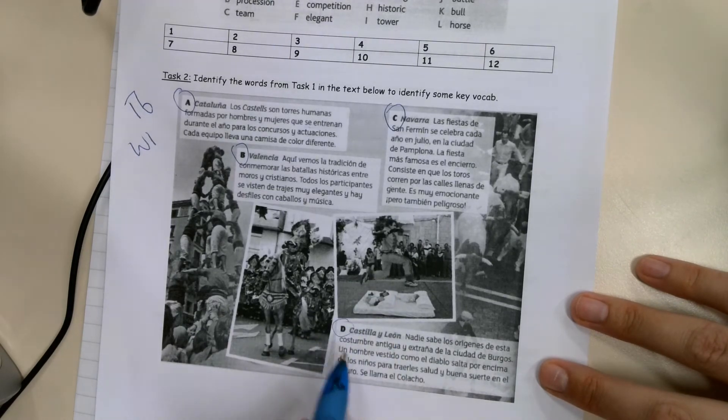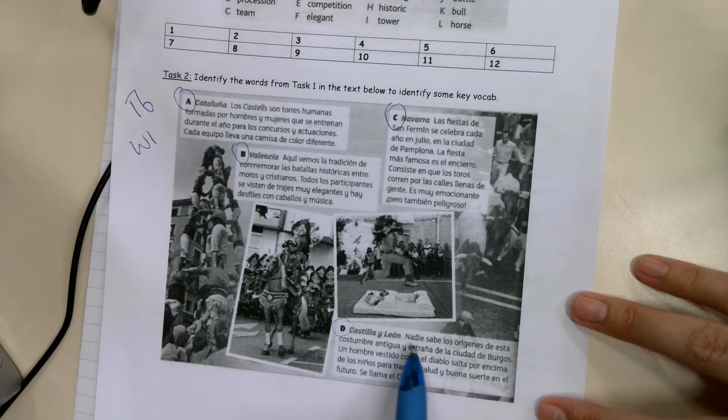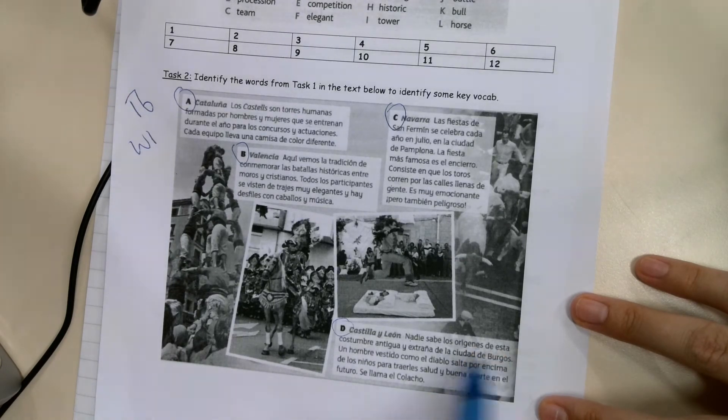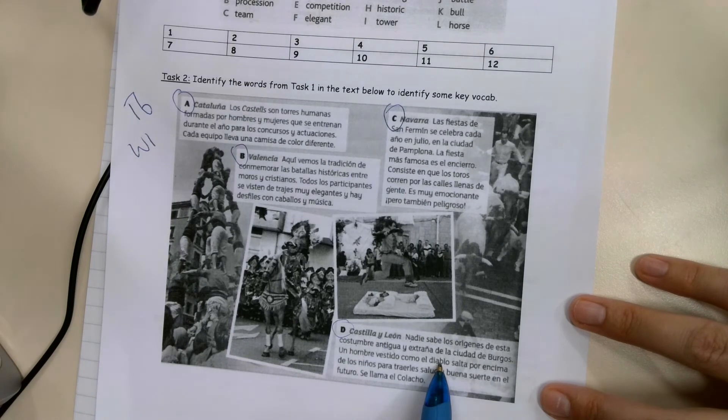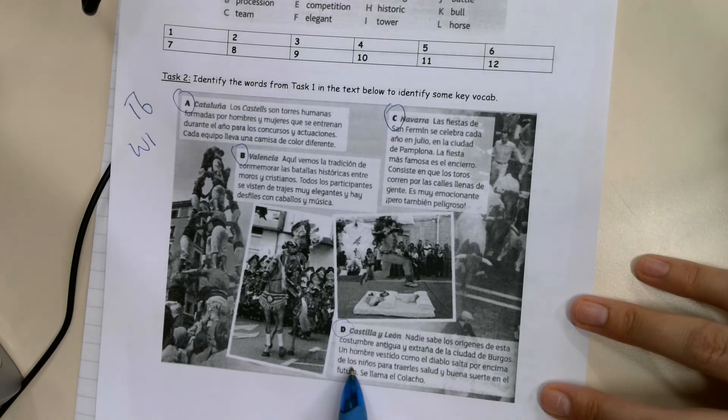And our last one is Castilla-Leon, which is a little bit more central Spain, not around the coast anywhere. Nadie sabe, no one knows the origins of this ancient, old-fashioned and strange tradition or custom from the city of Burgos. Now this one is a little bit weird. A man dressed as the devil jumps over children. So you can see here's the man there, children on the mattress down there, to bring them health and good luck in the future. And it's called El Colacho.